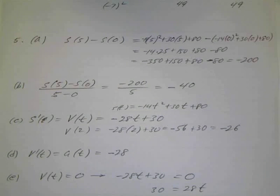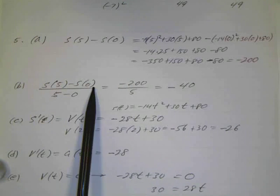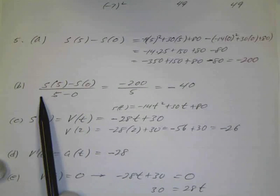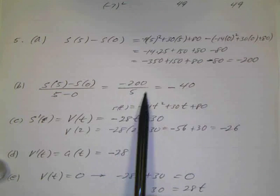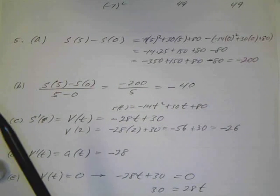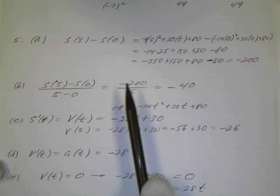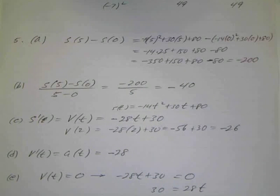For average velocity, that's the same as the average rate of change — change in distance over change in time. The change in distance is the displacement, negative 200 feet, and the change in time is 5 seconds. So negative 200 over 5 is negative 40 feet per second.